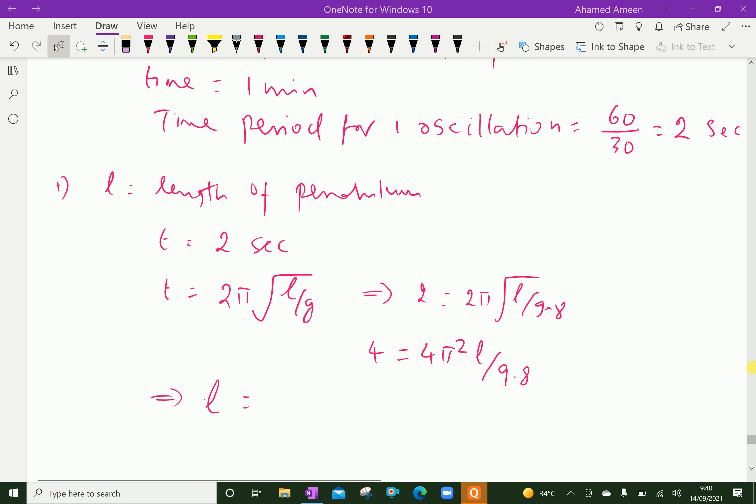L equals 4 into 9.8 over 4π squared which equals 0.994 meter, which means length of pendulum equals 0.994 meter.